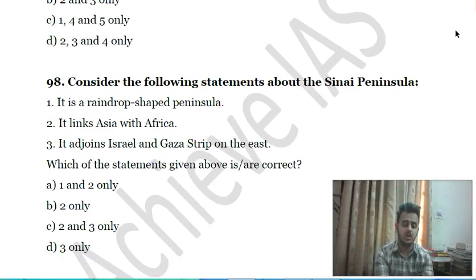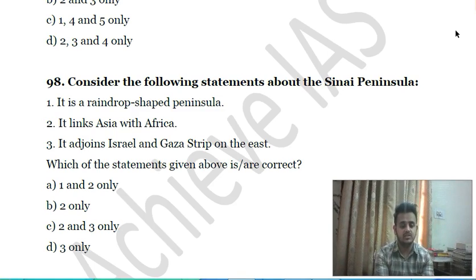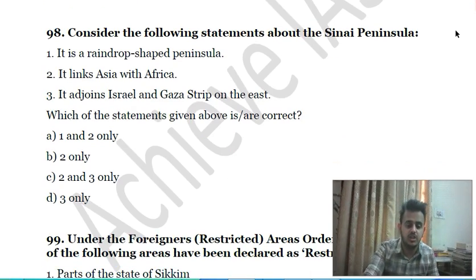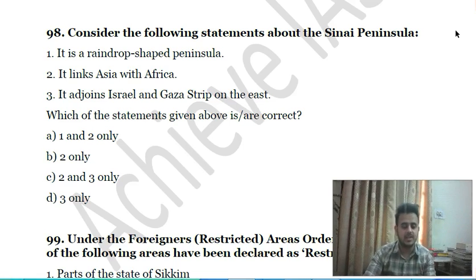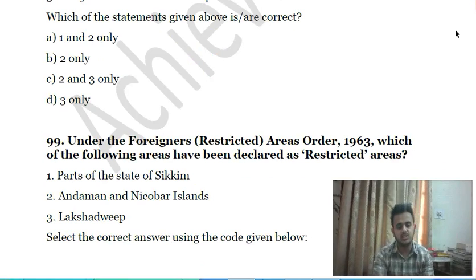Ninety-seventh question: consider the following statements about the Sinai Peninsula — first, it is a triangle-shaped peninsula; second, it links Asia with Africa; third, it adjoins Israel and the Gaza Strip on the east. Choose the correct answer.